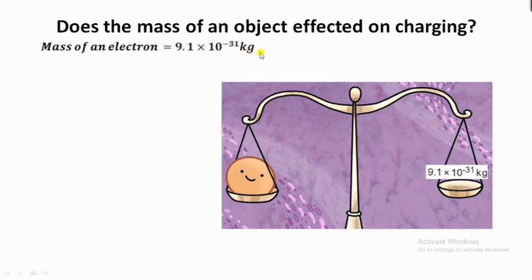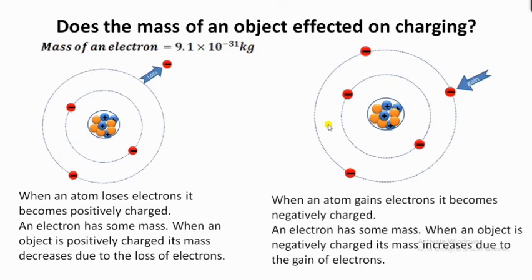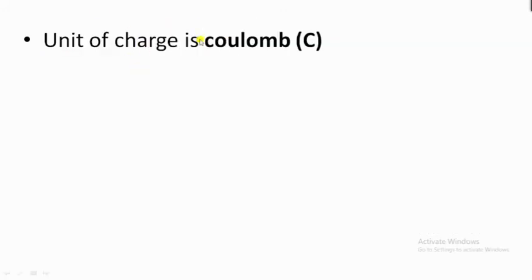When we give an electron to an object, we are also giving the mass of that electron, so the mass of the object changes upon charging. When an atom loses one electron and becomes positively charged, we are removing mass, so the mass of the object decreases. When we make an object negatively charged by adding an extra electron, we are adding extra mass, so the mass of the object increases.